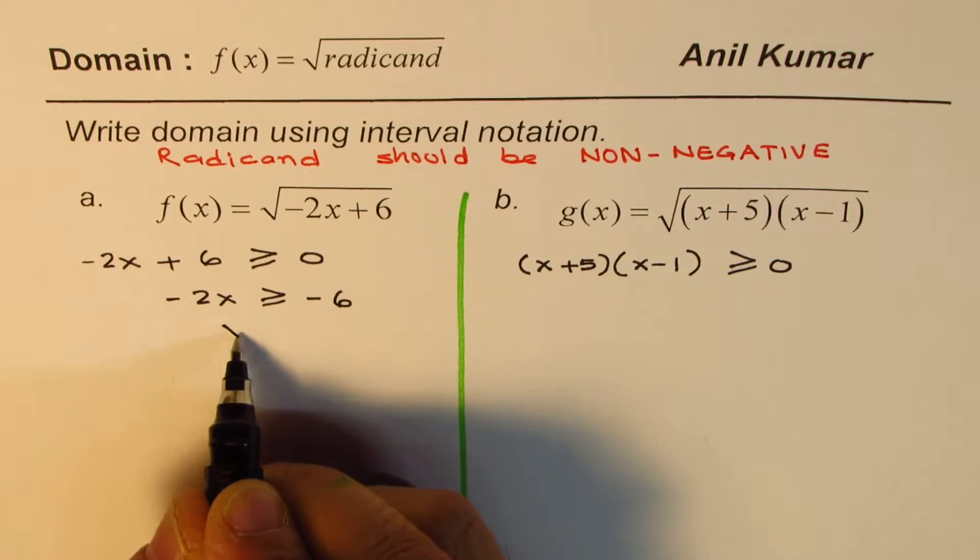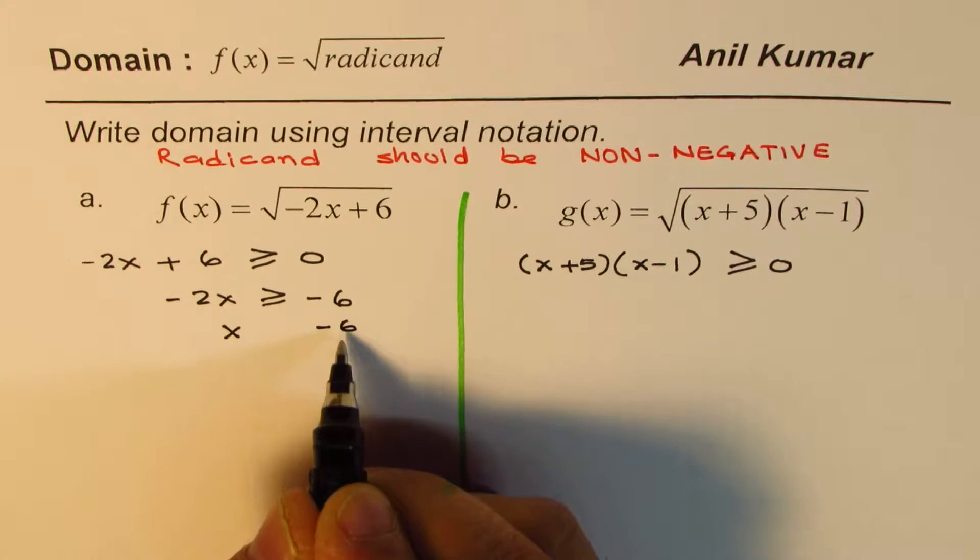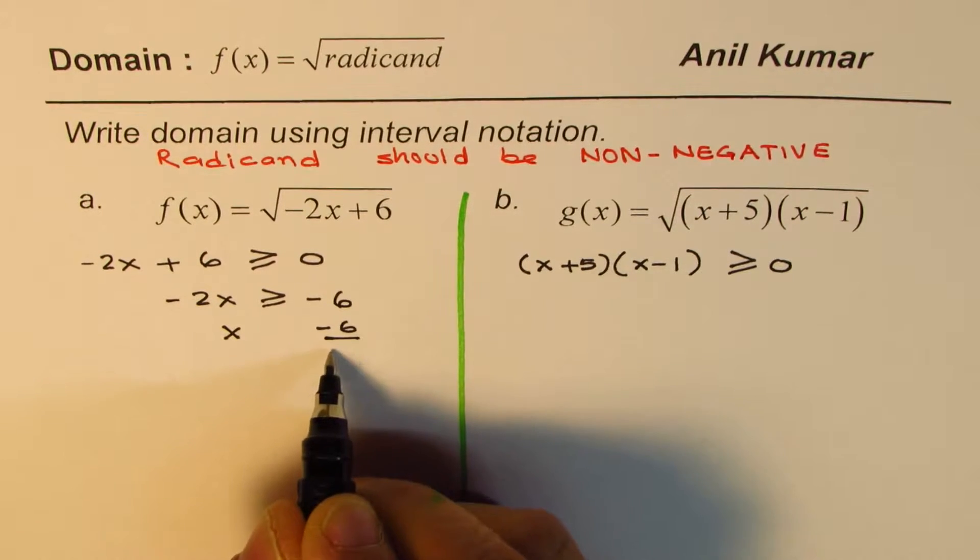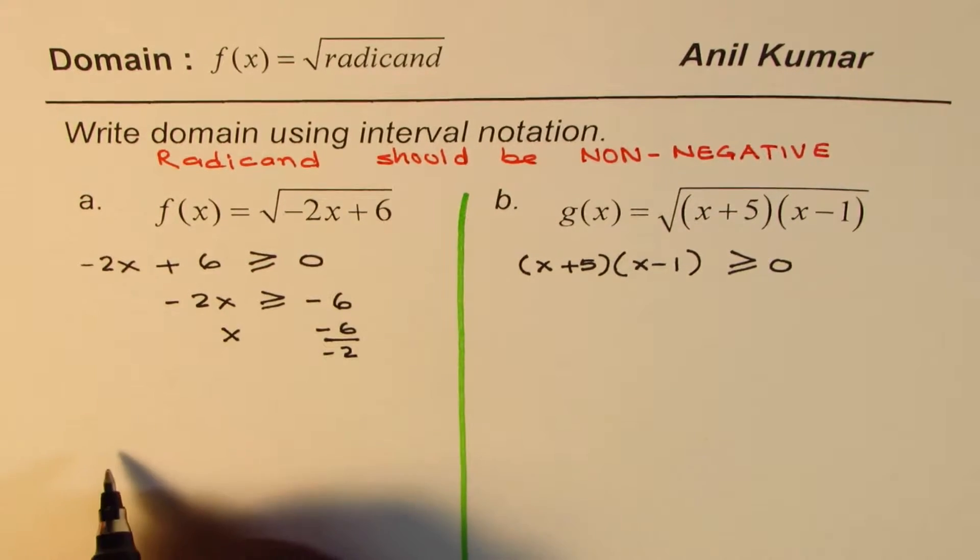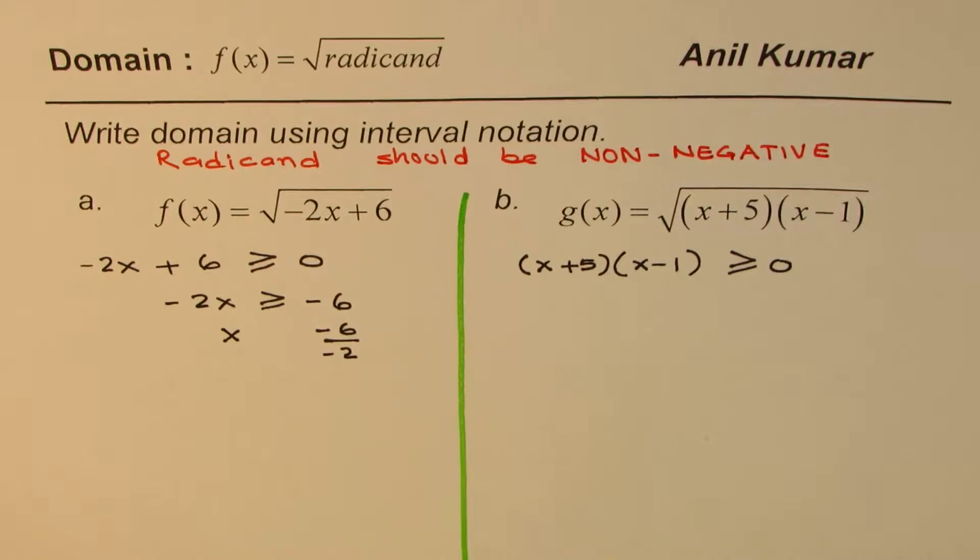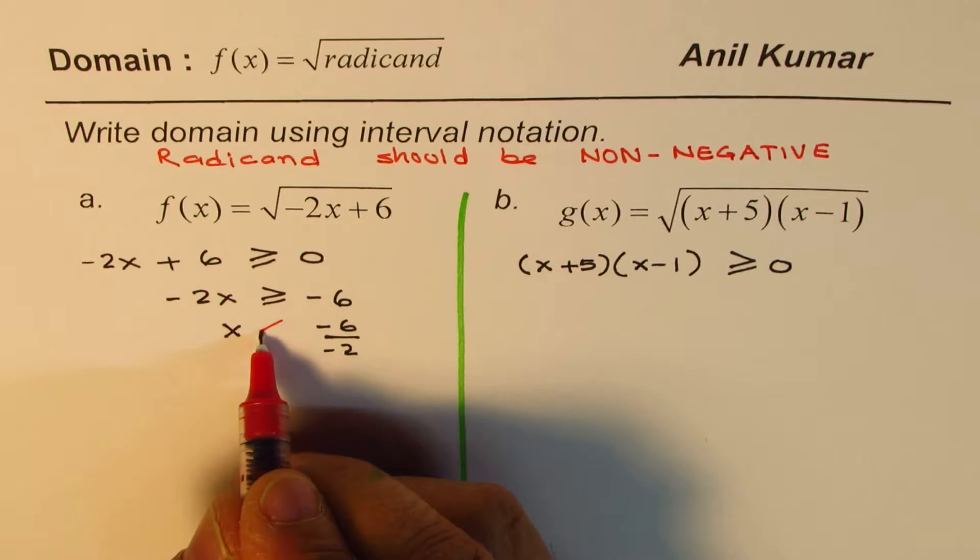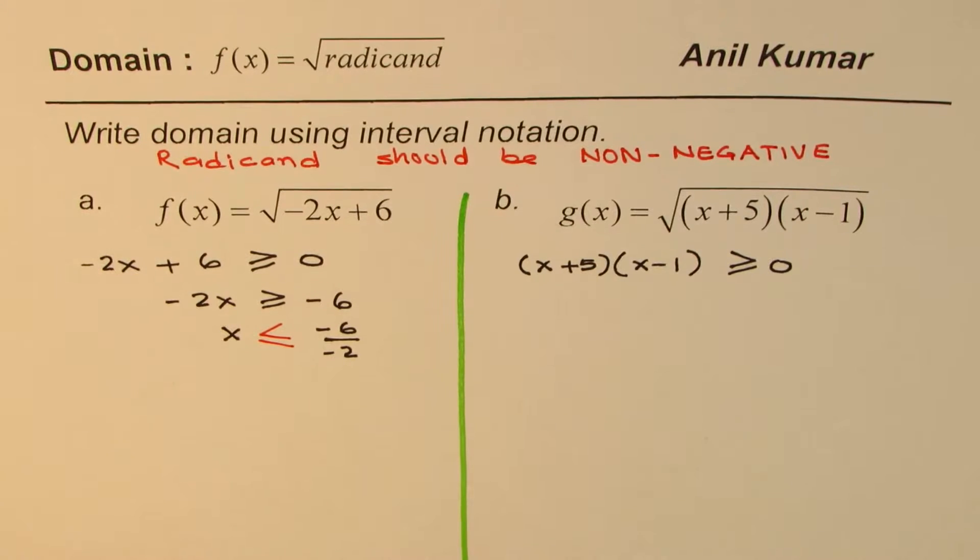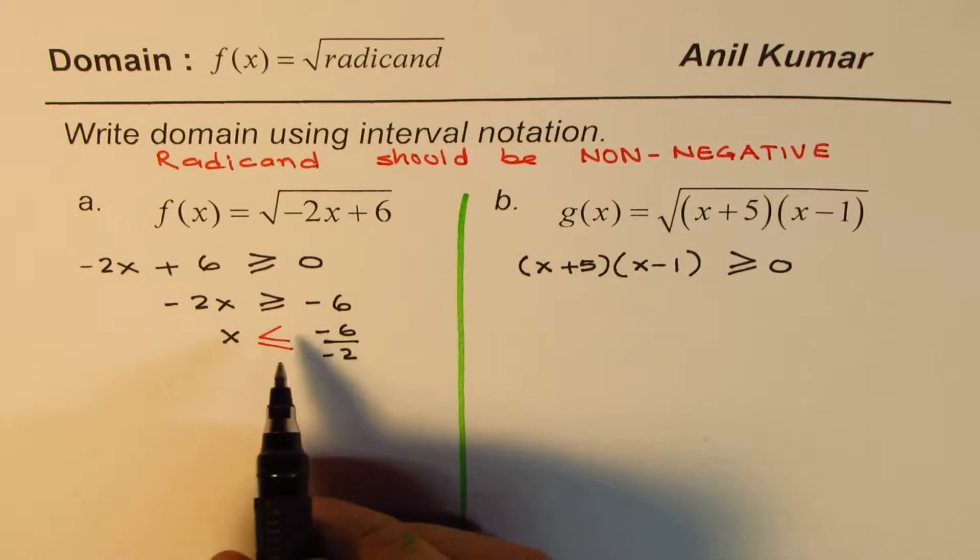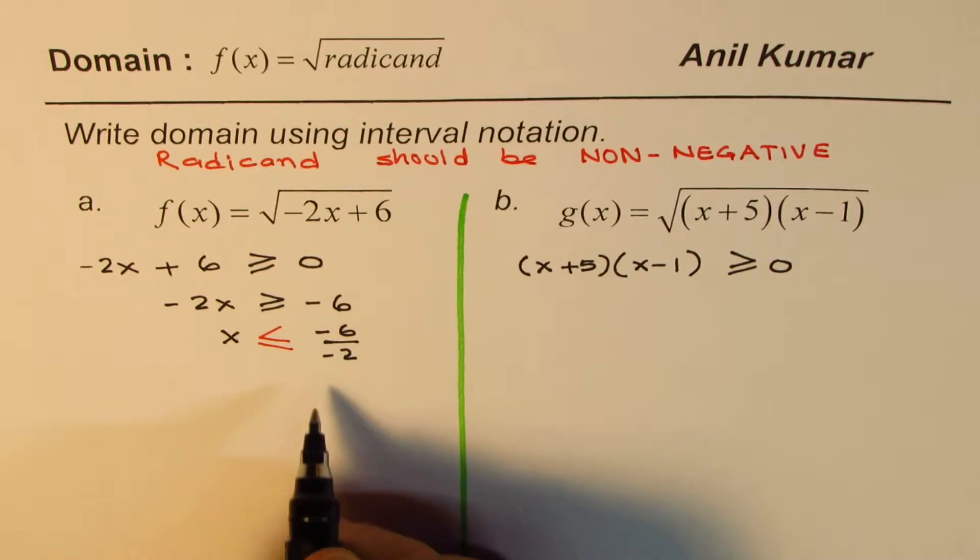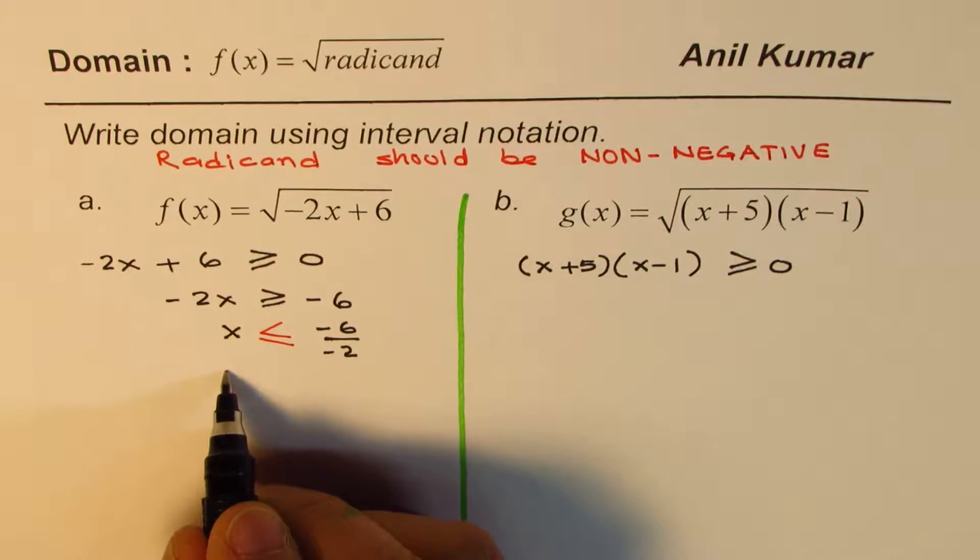We can divide by -2. Now when you divide by -2, what happens to the inequality sign? It reverses, right? A very critical step - sometimes we may make a mistake here. Remember, you have to reverse this when you divide or multiply by a negative number in inequalities.